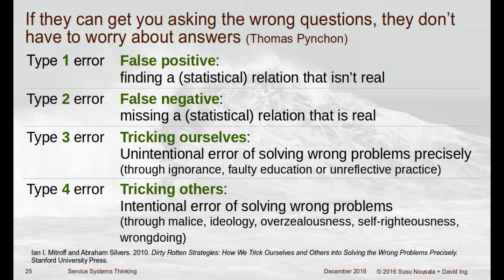There's a type three error, which is treating ourselves — the unintentional error of solving the wrong problem precisely. Taking mobility as a service as an example: are you solving a problem that actually needs to be solved? We can do mobility as a service, but is it really the problem we're solving? If we work on it and it's not a problem we need to solve, we're tricking ourselves — we've made a mistake because we're asking the wrong questions. That's why in the pattern form, things are posed as questions, not statements, because we want to make sure we're asking the right questions.